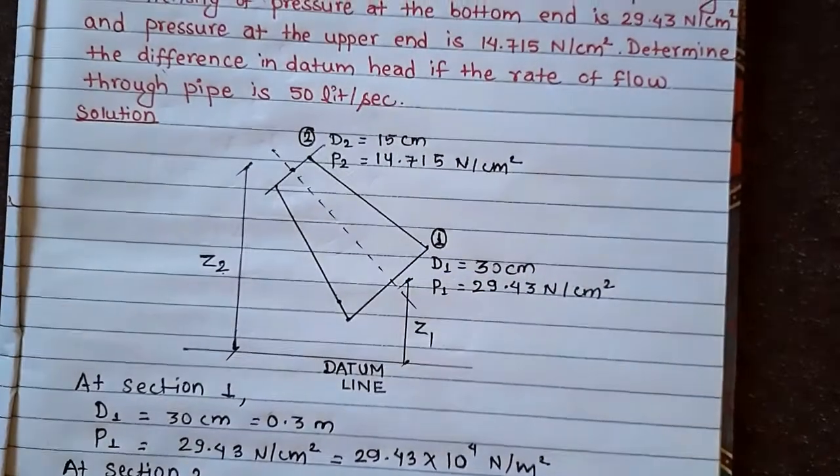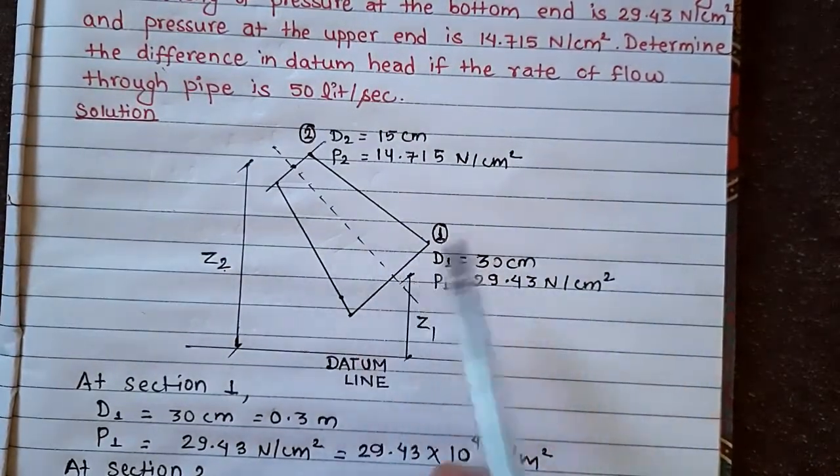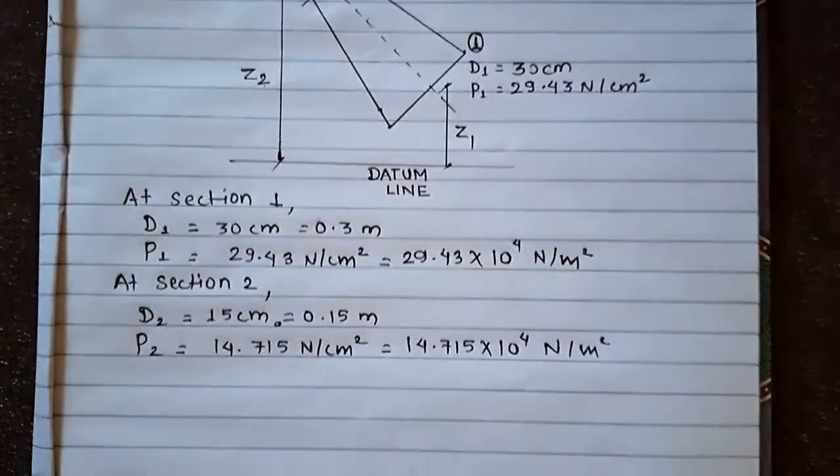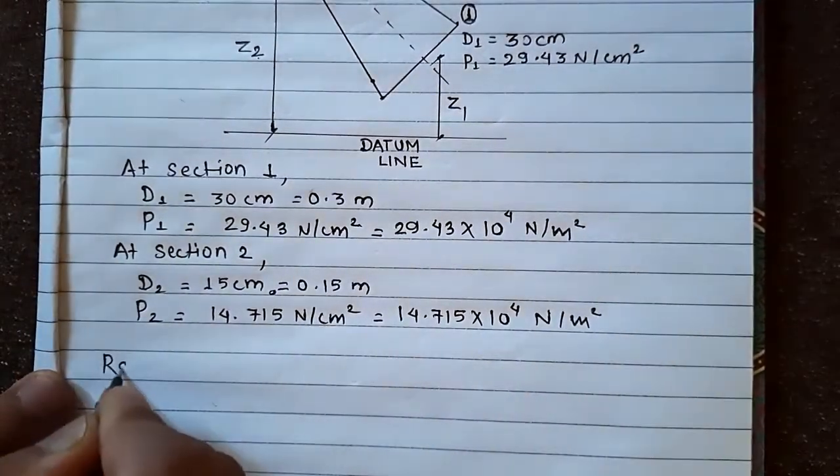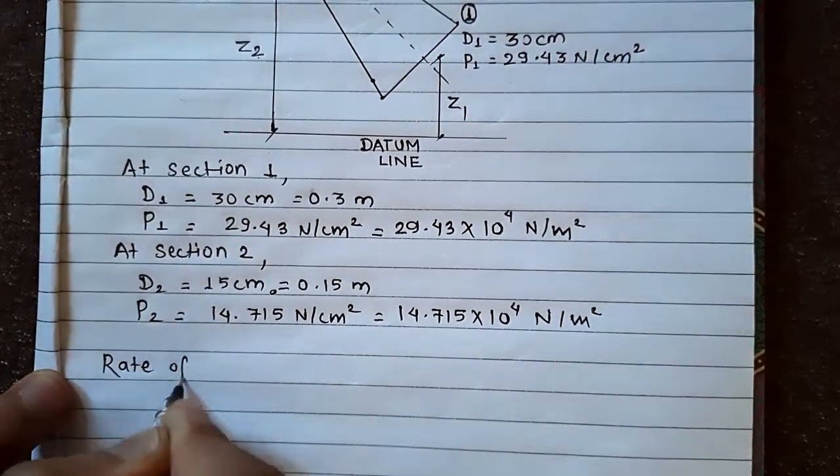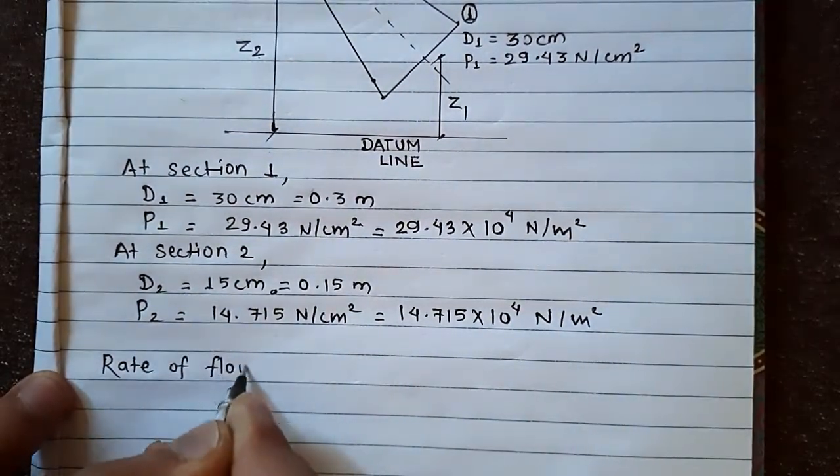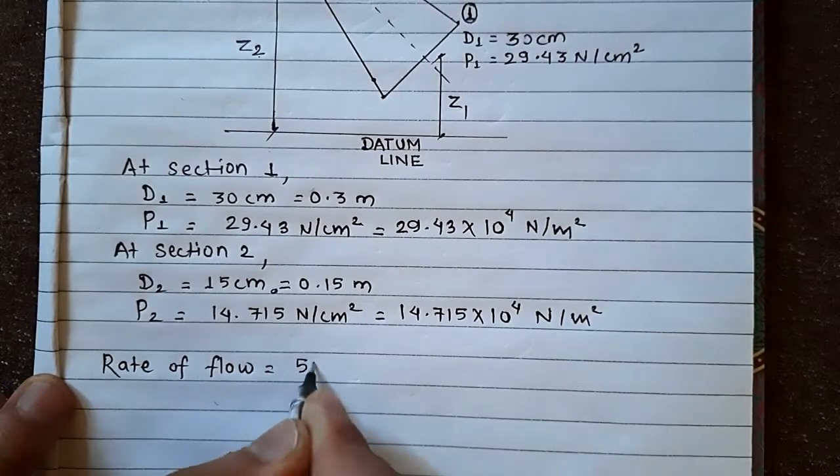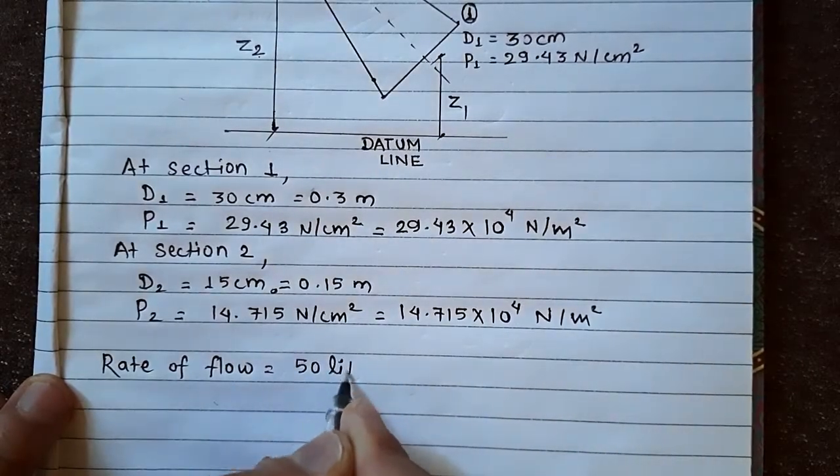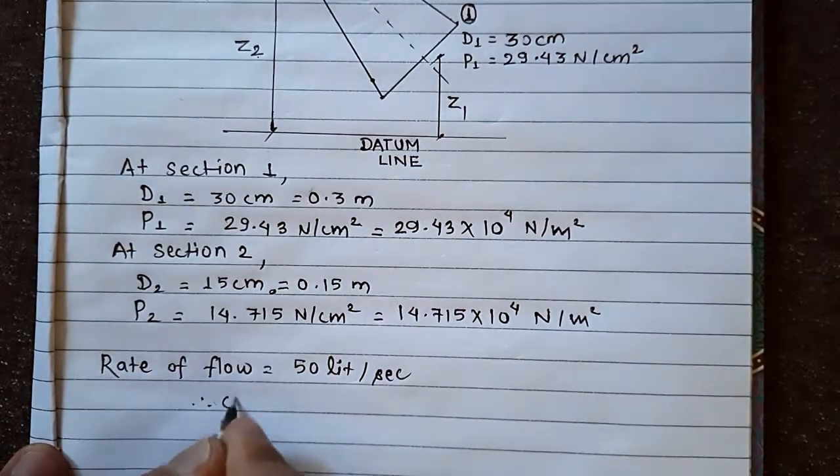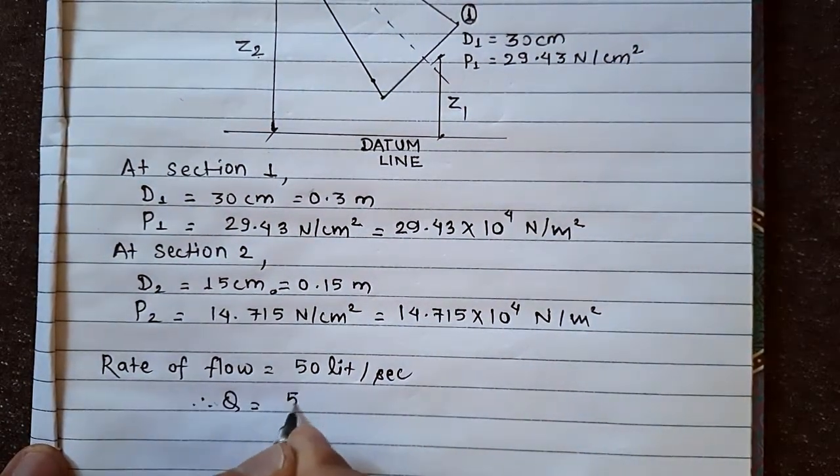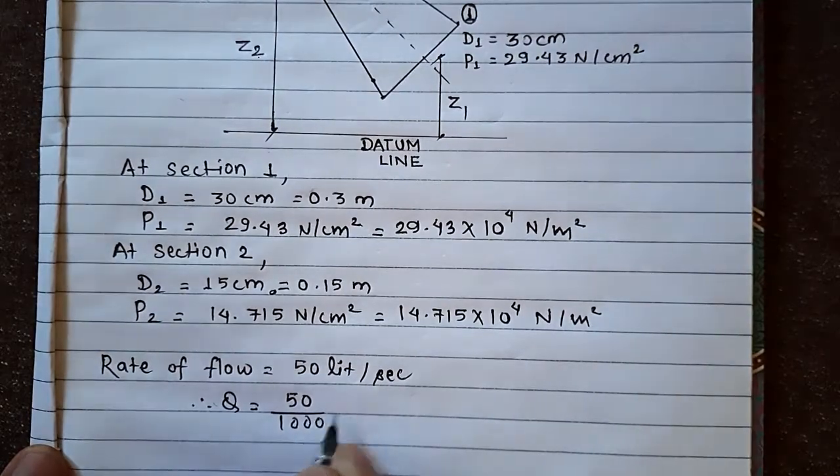Now, rate of flow through the pipe is 50 liter per second. This is the discharge. Rate of flow 50 liter per second. Therefore Q equals to 50 by 1000.